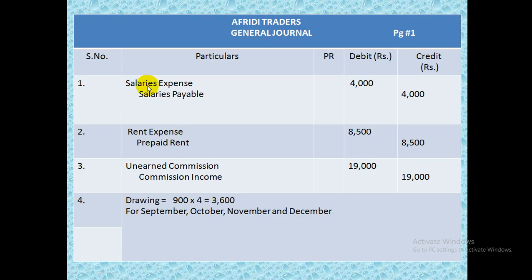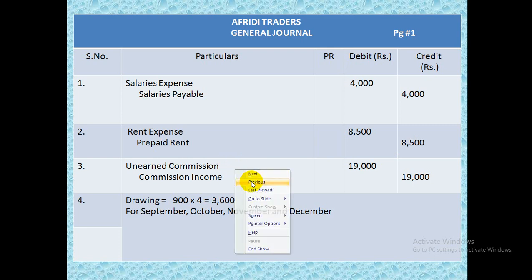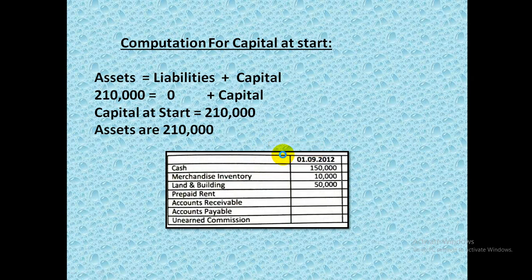Let's see the entries. For accrued salaries given as 4,000 in the question: salary expense debit, salary payable credit — so salary payable will appear in our statement of affairs. If we had to prepare a profit and loss account it would go into expenses, but since net profit is already given we don't need to prepare a profit and loss account. Then rent expense debit and prepaid rent credit — whatever balance was there minus what remains is our expense, so prepaid rent is crediting and will be subtracted from the balance sheet amount.